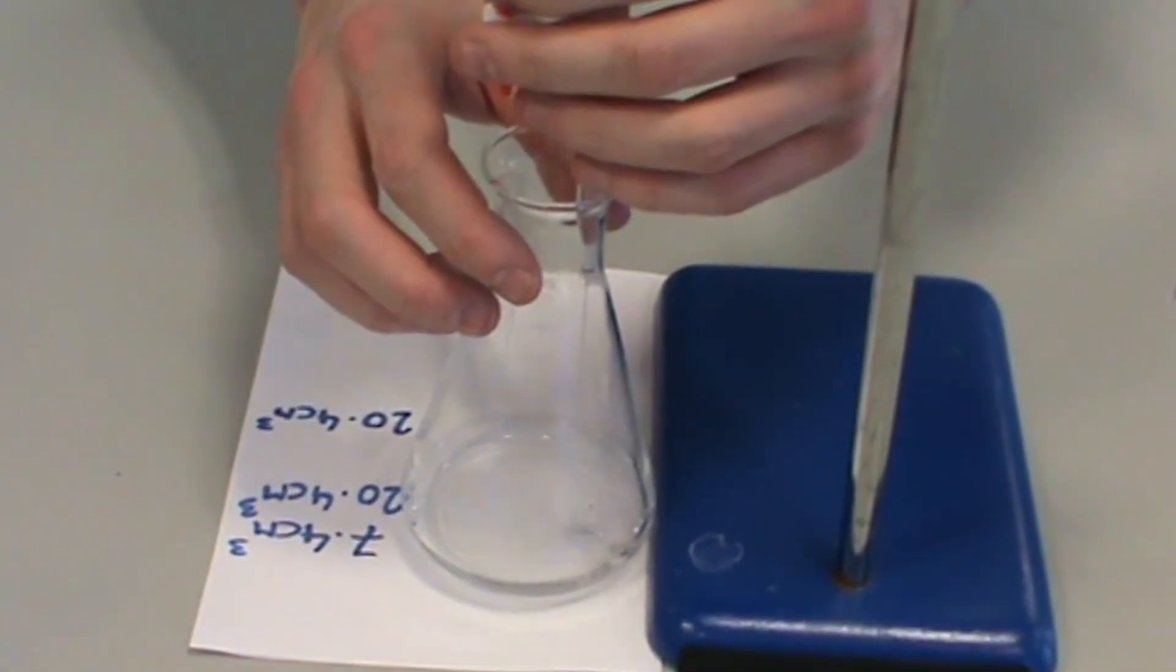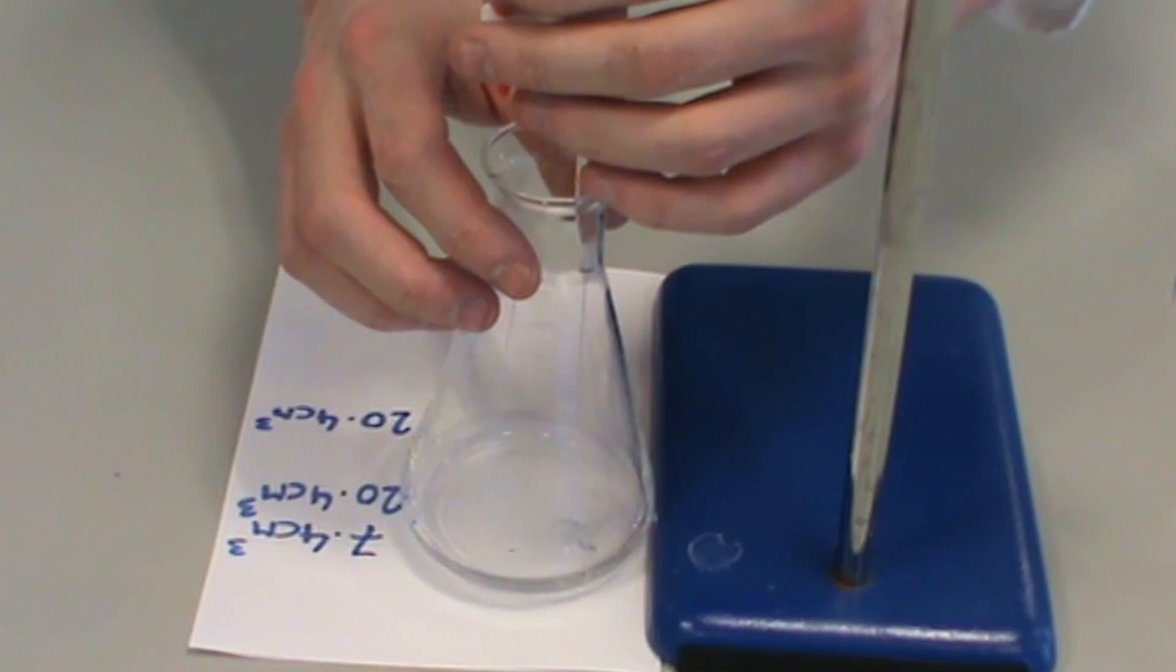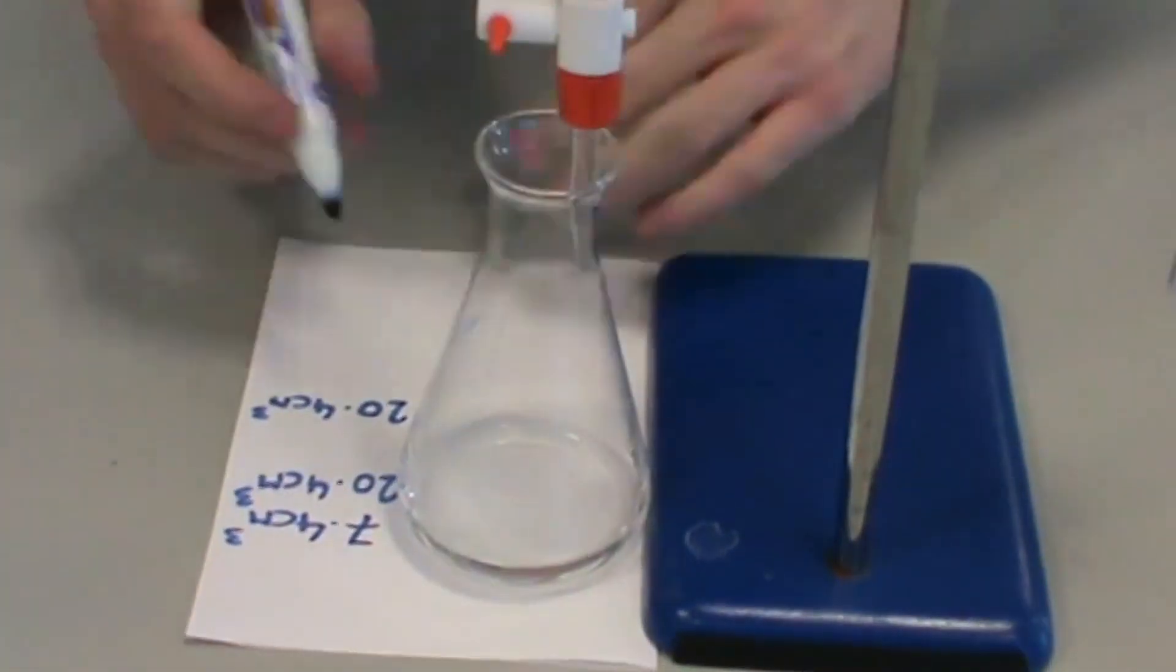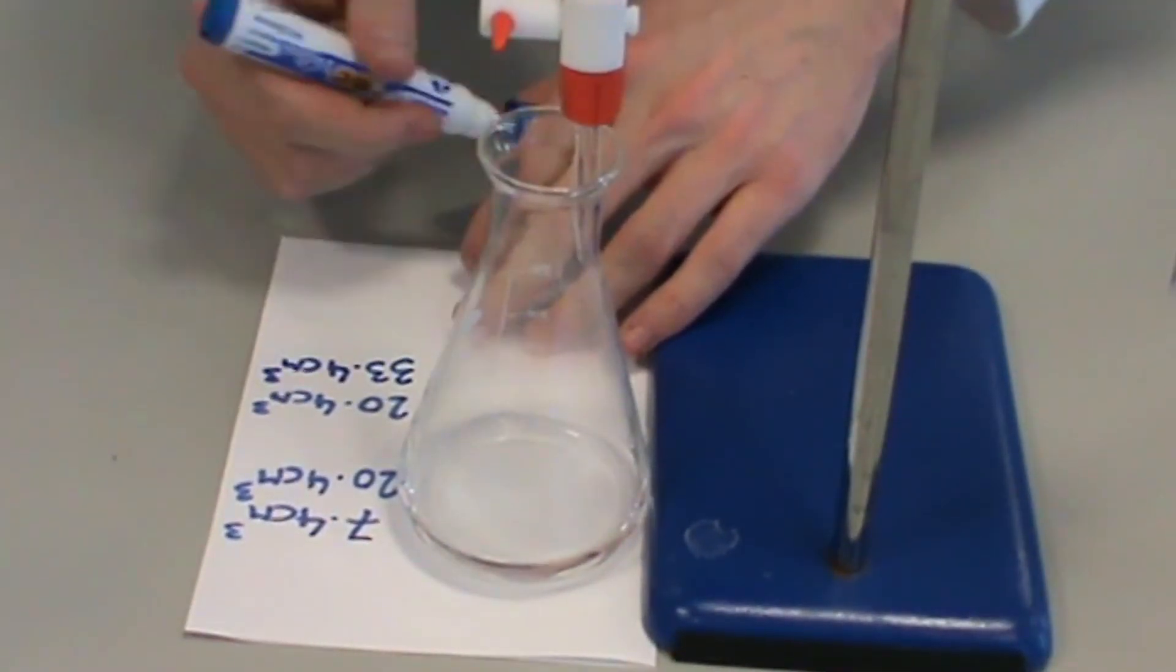Place the conical flask under the burette and note the initial burette reading. Now run the same volume of acid into the conical flask as when you did it the first time around. This ensures you have added enough acid to fully neutralise the sodium hydroxide solution.